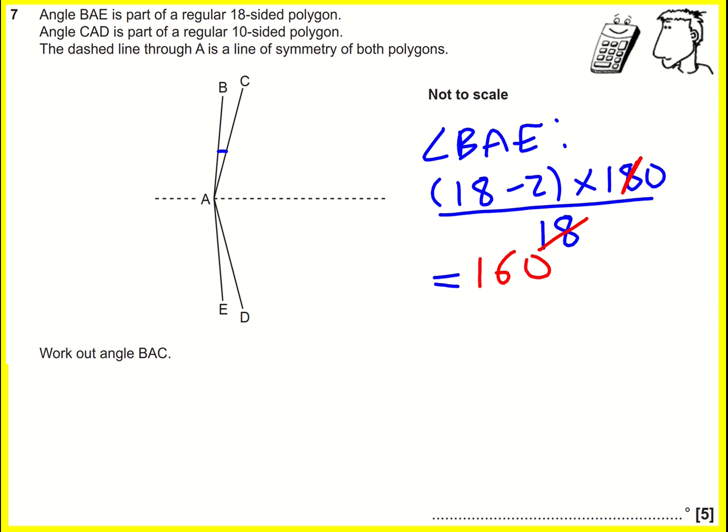Now just so you're aware, just to remind you, another way that you can work out angle BAE is to do the exterior angle. The exterior angles always add up to 360. Actually, I'm just going to write it here.